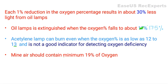Here are some important points to keep in mind. Each 1% reduction in oxygen results in about 30% less light from oil lamps — meaning if oxygen drops by 1%, light from oil lamps reduces by about 30%. Also, oil lamps are extinguished when the oxygen percentage falls to about 17.5%.